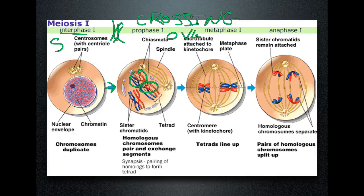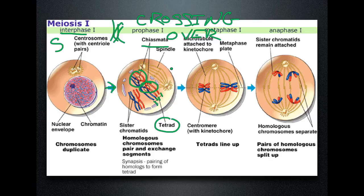A couple of other terms you need to know: these two homologous chromosomes lying next to each other is called a tetrad because there are four sister chromatids — tetra means 4. The place where crossing over happens, where those chromosomes actually trade information, is called the chiasmata. From this point, everything is the exact same as in mitosis. You have chromosomes lining up in metaphase — remember they line up across the middle — and then in anaphase, homologous chromosomes separate. That is the whole of meiosis 1.